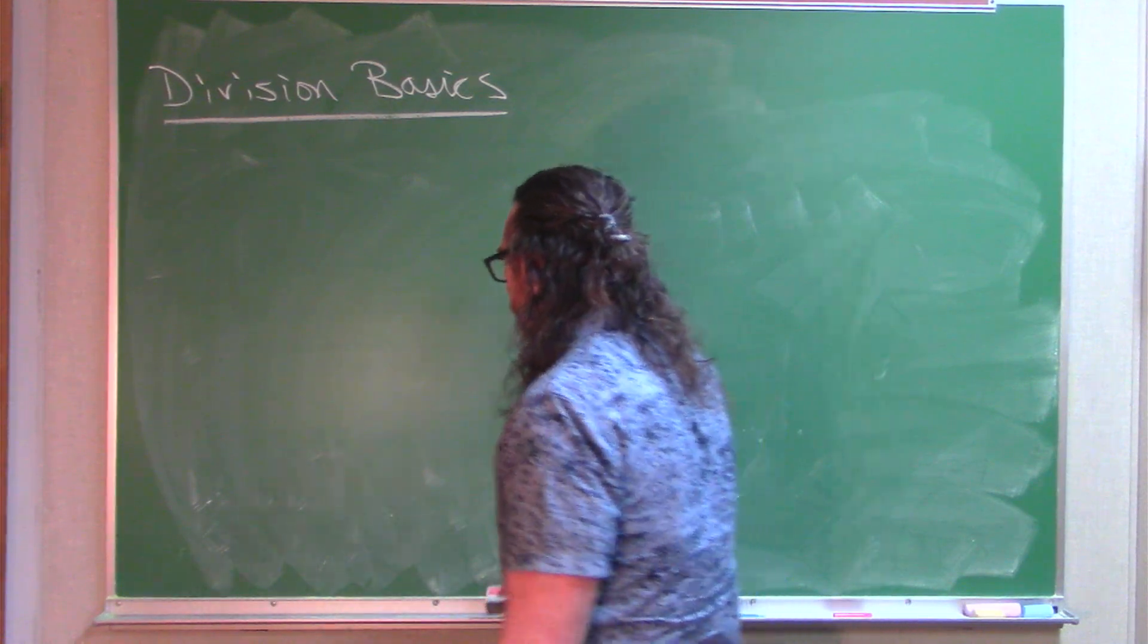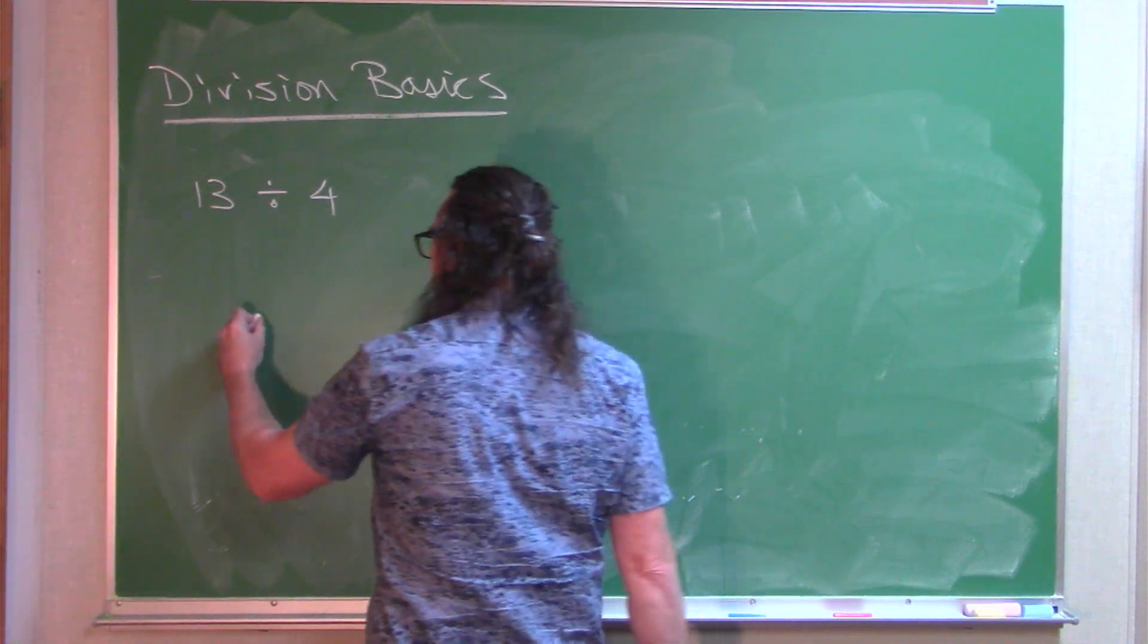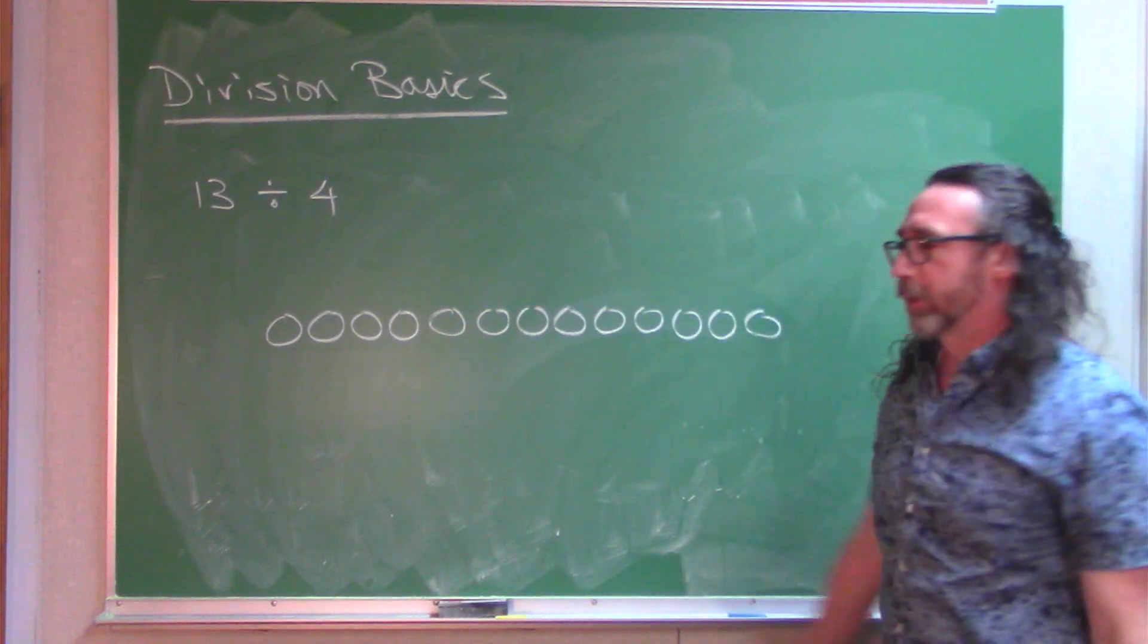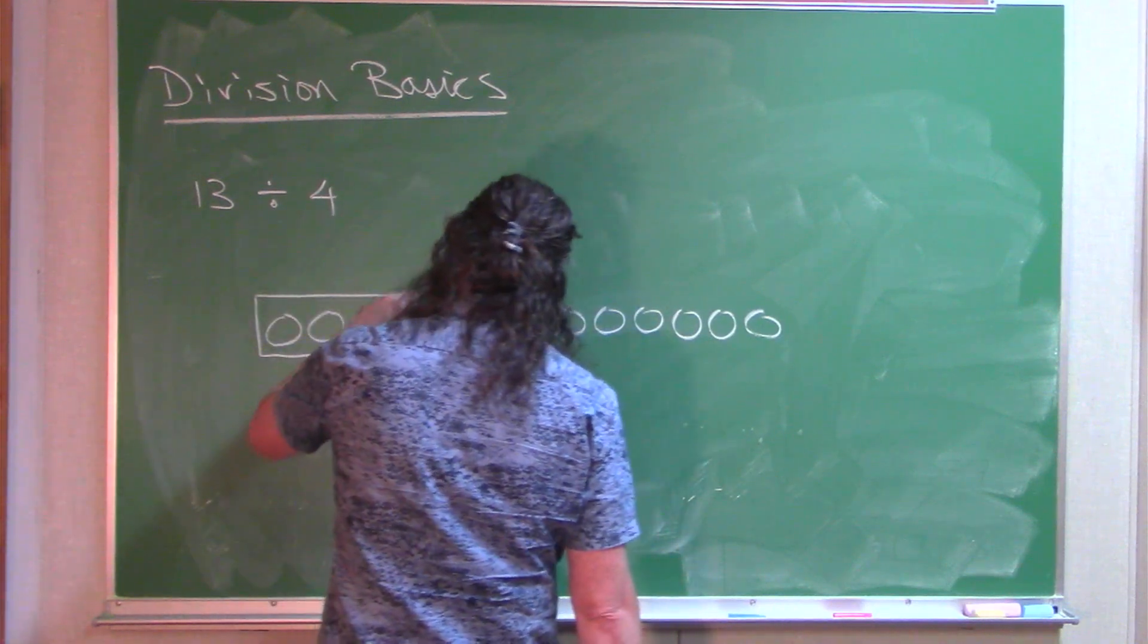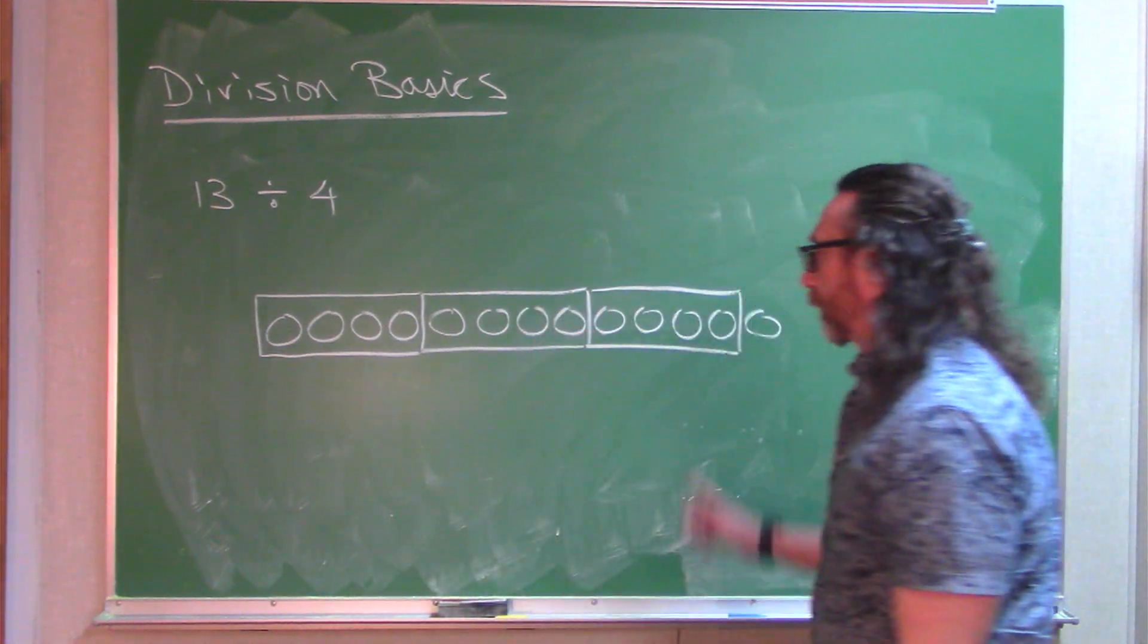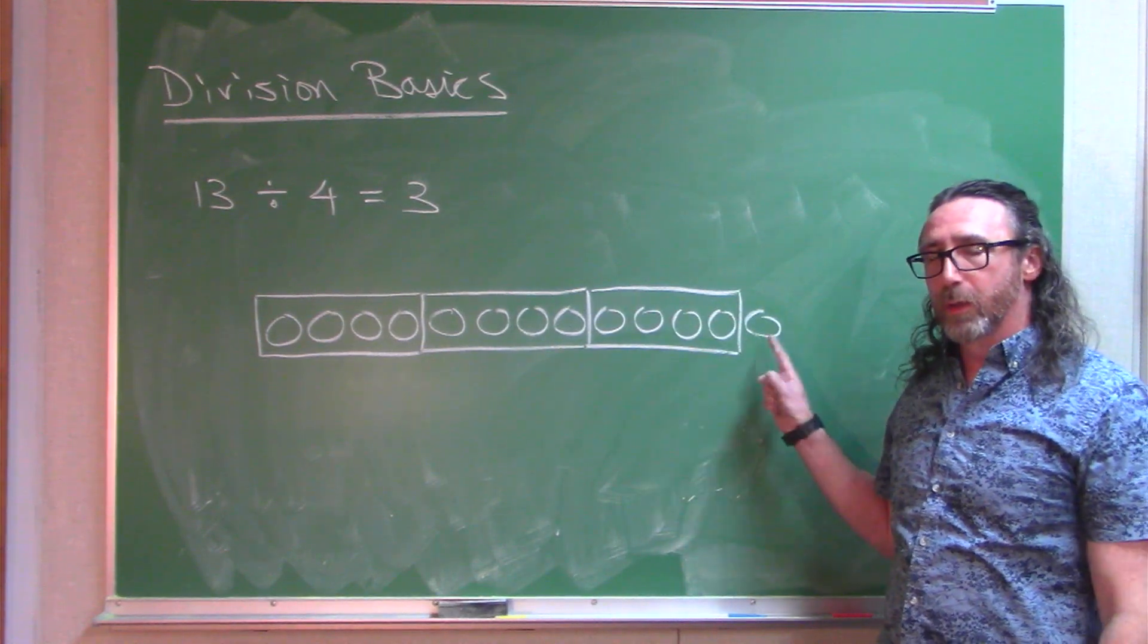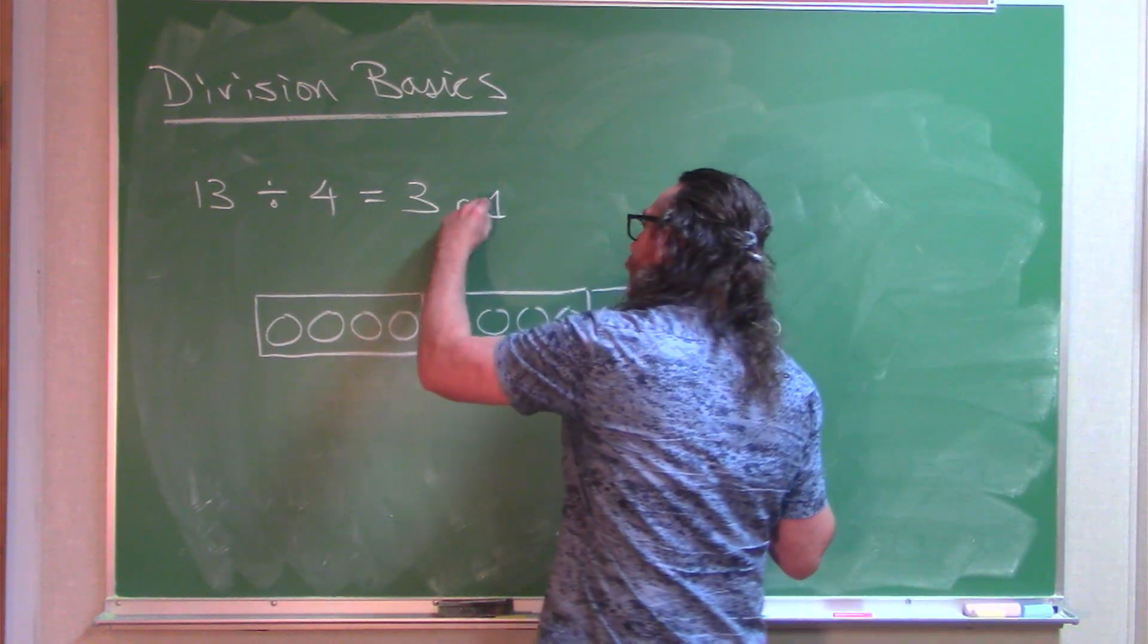So let me do another kind of similar one here. If I were to do 13 divided by 4, let's do the same setup. 1, 2, 3, 4, 5, 6, 7, 8, 9, 10, 11, 12, 13. I've got a collection of 13 items. I am breaking them up into groups of 4 and I want to see how many groups. Well, there's 1 group of 4, there's a 2nd group of 4, there's a 3rd group of 4. But we can see here, there's a little difference. 1 group of 4, 2 groups of 4, 3 groups of 4. I don't quite have all 13 things covered. I have one left over. We call that our remainder.